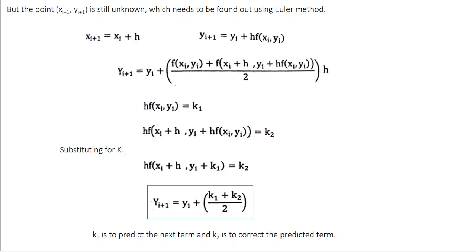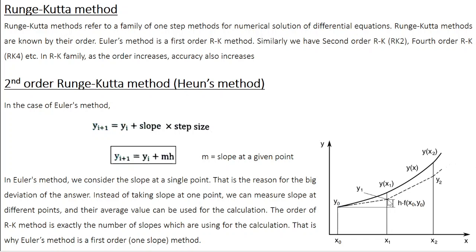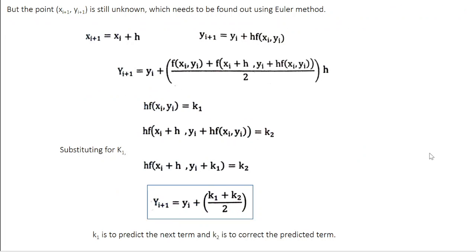Looking at this scheme phenomenologically: k1 is the prediction term — you are predicting the y value at the next point using Euler's method. In the second equation, k2 uses the predicted value of y to calculate the slope and then finds the average slope. So k2 is the correction or improvement term, correcting the previous prediction made by Euler's method, which is not very accurate.